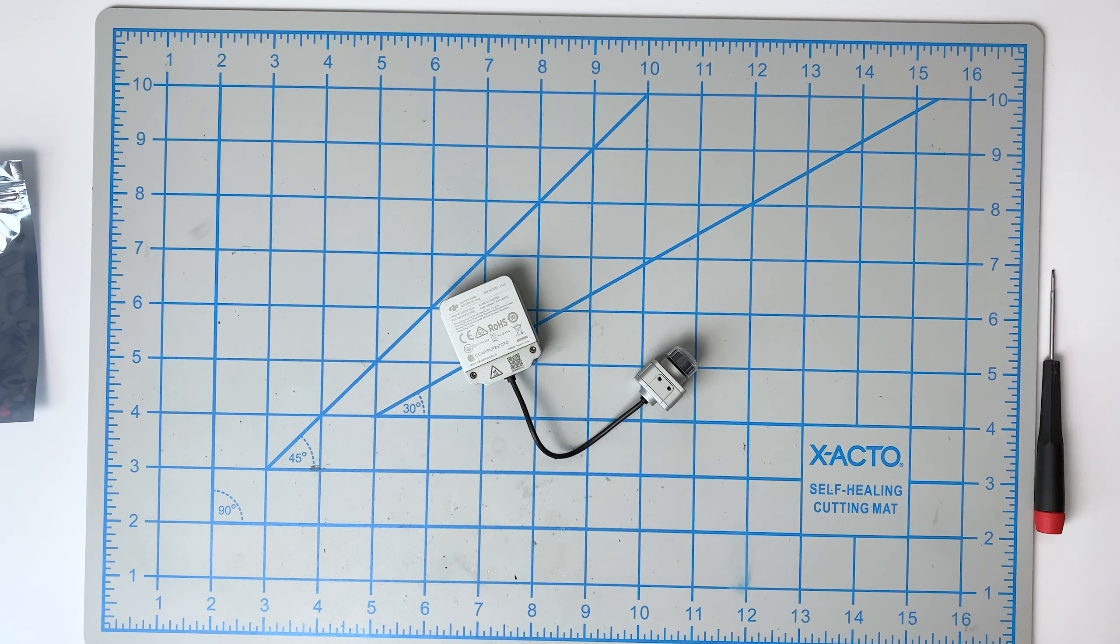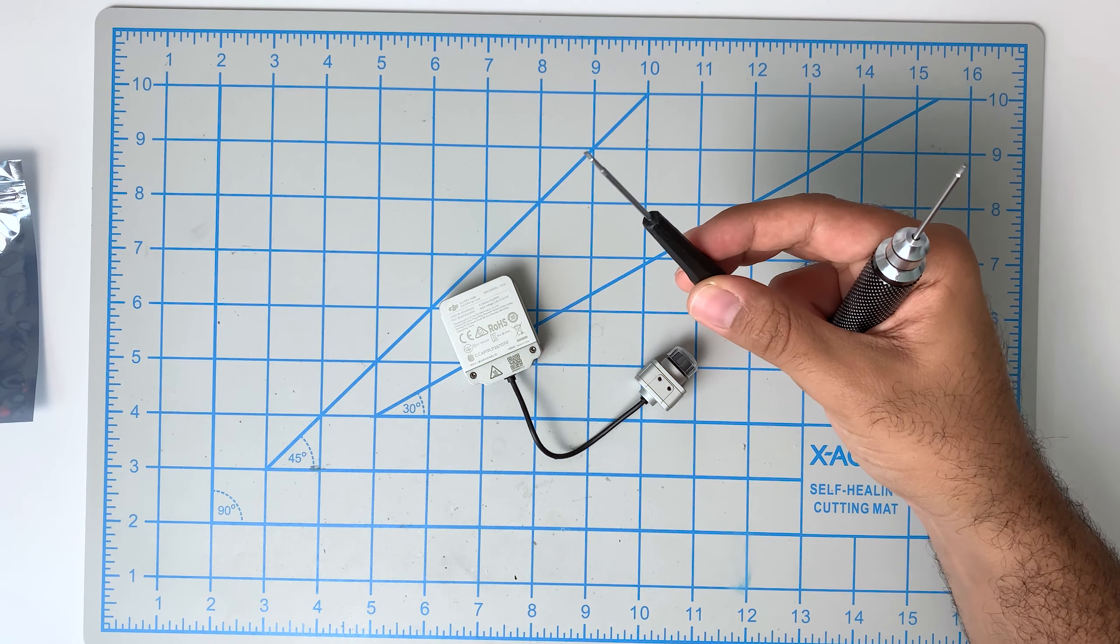In order to replace the camera cable on the original DJI air unit, you're going to need two tools. A 1.5 millimeter hex driver and a small flat head screwdriver.